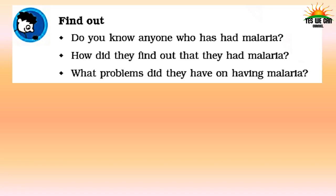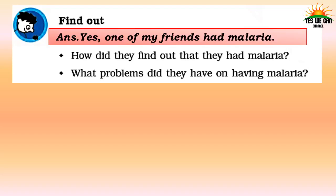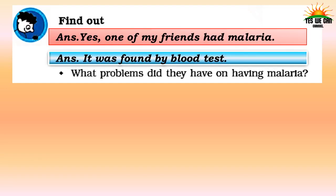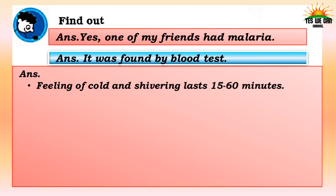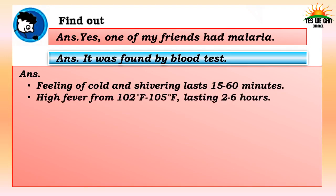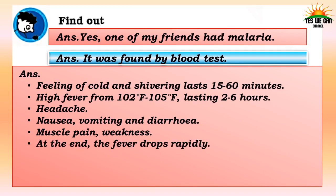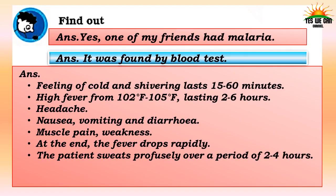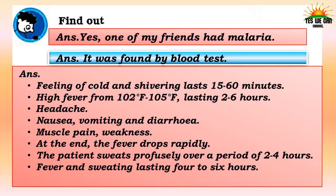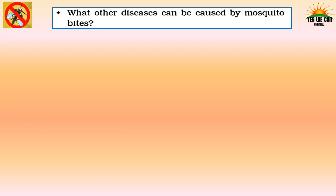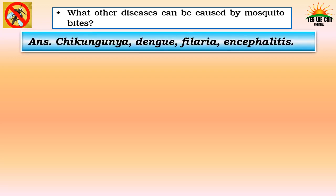Do you know anyone who has had malaria? One friend had malaria found by a blood test. The problems experienced included: feeling of cold and shivering lasting 15 to 60 minutes, high fever from 102 to 105 degrees Fahrenheit lasting 2 to 6 hours, headache, nausea, vomiting, diarrhea, muscle pain, weakness, fever dropping rapidly at the end, profuse sweating over 2 to 4 hours, and fever occurring every 2 to 3 days.